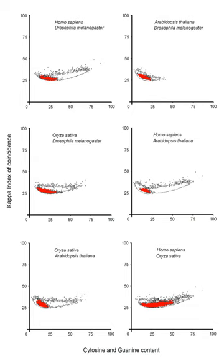In bacteria, the promoter contains two short sequence elements approximately 10 and 35 nucleotides upstream from the transcription start site. The sequence at −10 has the consensus sequence TATAAT. The sequence at −35 has the consensus sequence TTGACA. These consensus sequences, while conserved on average, are not found intact in most promoters. On average, only 3 to 4 of the 6 base pairs in each consensus sequence are found in any given promoter.